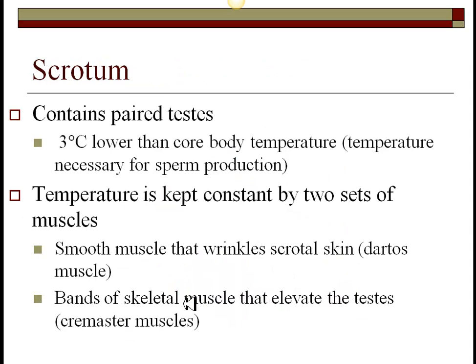The scrotum itself simply contains the paired testes. It does have a job — it keeps the testicles about three degrees Celsius lower than the core body temperature, and if it gets too warm, sperm production does not occur. The temperature is maintained by two sets of muscles that contract and relax the scrotum: the dartos muscle and the cremaster. These raise the testicles when too cold and relax when it gets a little too warm.